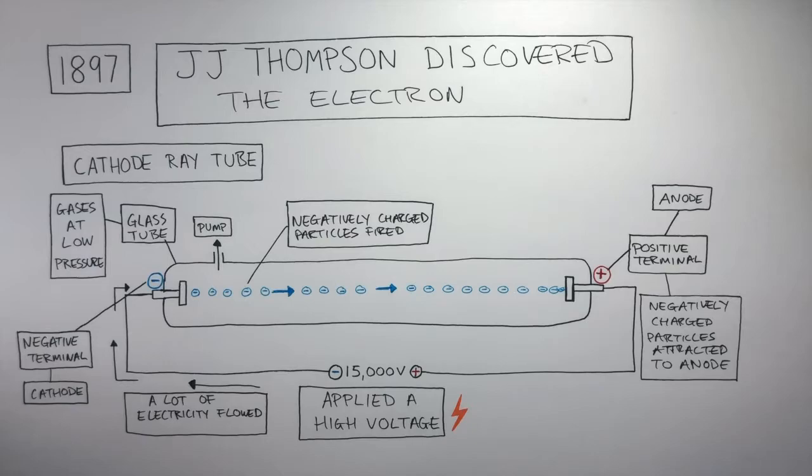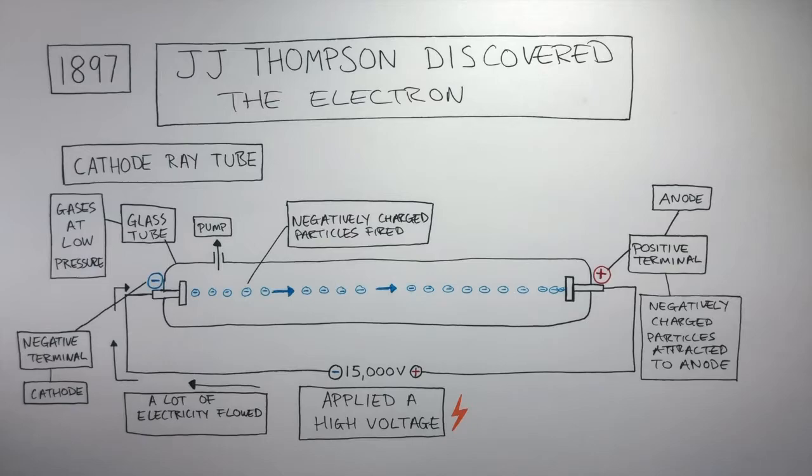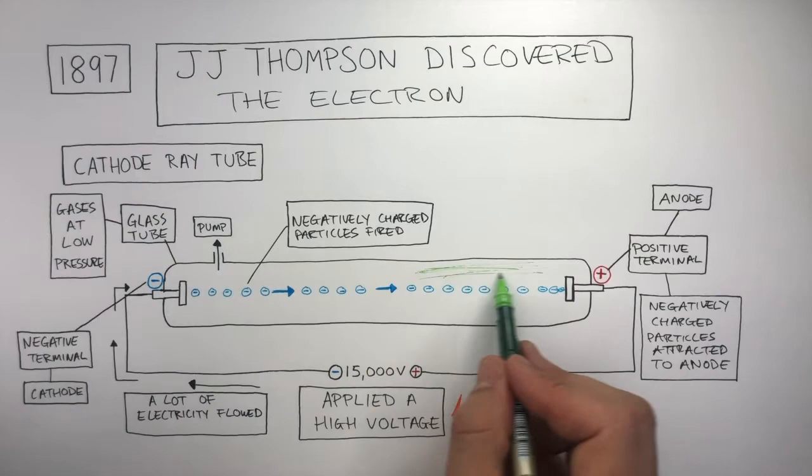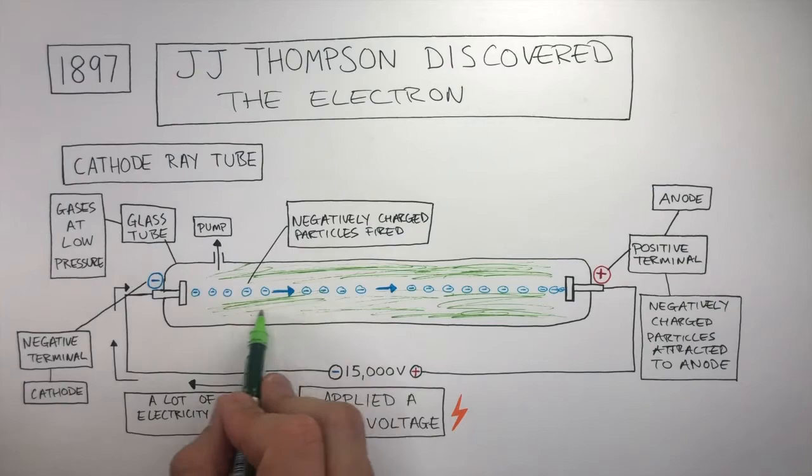Negative and positive always attract each other, whereas the same charges repel. When the negatively charged particles were flowing in the glass tube, Thompson noticed there was a very vivid green glow.